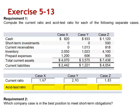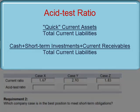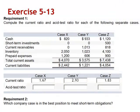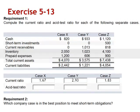The acid test ratio takes a closer look at the availability of current assets to satisfy current liabilities. The numerator only includes quick current assets, which would include cash, short-term investments, and current receivables, and would exclude inventory and prepaid expenses.